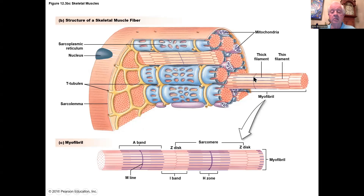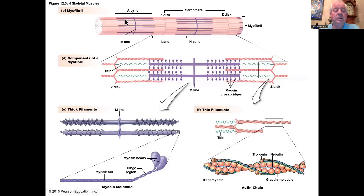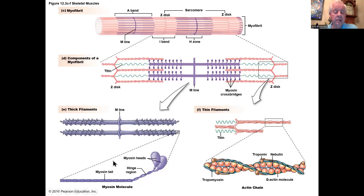Skeletal muscle is striated, and the striations are caused by regularly repeating patterns of thick filaments and thin filaments. Here we see the A band, which is the dark band, and the I band, which is the light band. Those are caused by the way the myofilaments interact. A myofilament is a small subunit of a myofibril. We have two kinds: thick filaments, made up of the molecule called myosin. Each thick filament has hundreds of myosins, and each myosin has two myosin heads, a flexible hinge, and a tail.